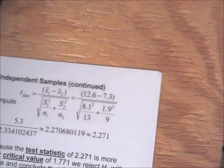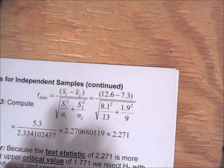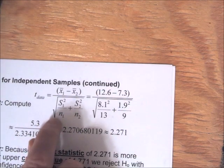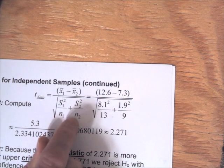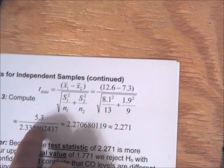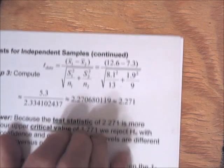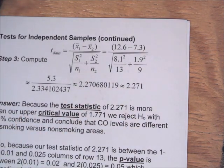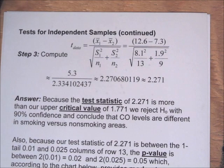For the test statistic, compute X1-bar minus X2-bar, then divide by the square root of S1 squared over N1 plus S2 squared over N2. That gives 5.3 divided by approximately 2.33, which equals approximately 2.271. Because the test statistic of 2.271 is greater than the upper critical value of 1.771, we reject H0 with 90% confidence and conclude the mean carbon monoxide levels are different in smoking versus non-smoking areas.